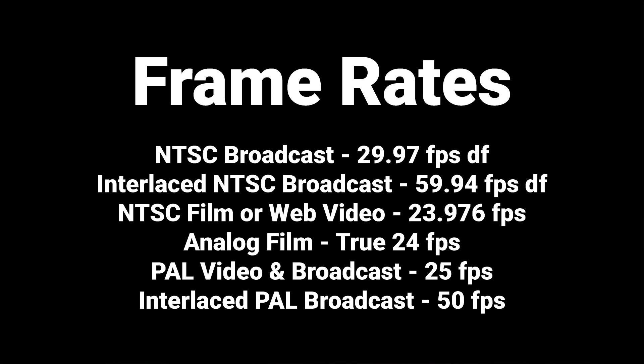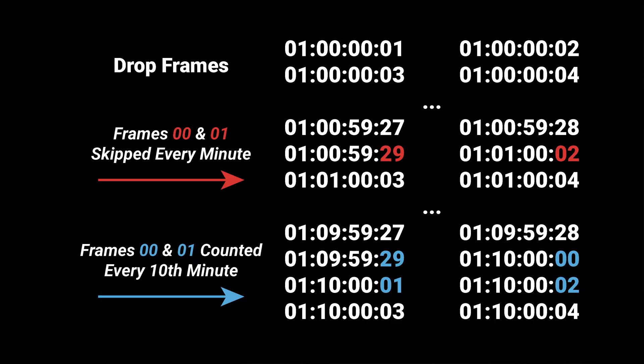So you might be asking what drop frame is. Since video can't be recorded in partial frames, there is a way of correcting the drift between real-world time and video time by dropping frames in the counting process. There are no actual video frames lost — it's just how it's counted.